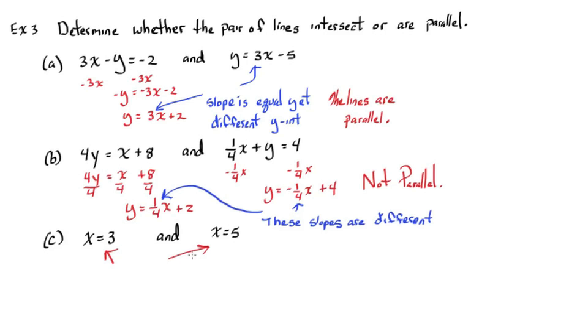For part C, we have x equals 3 and x equals 5. These lines are both vertical lines. Therefore, they are parallel. We don't have to put this into y equals mx plus b form.